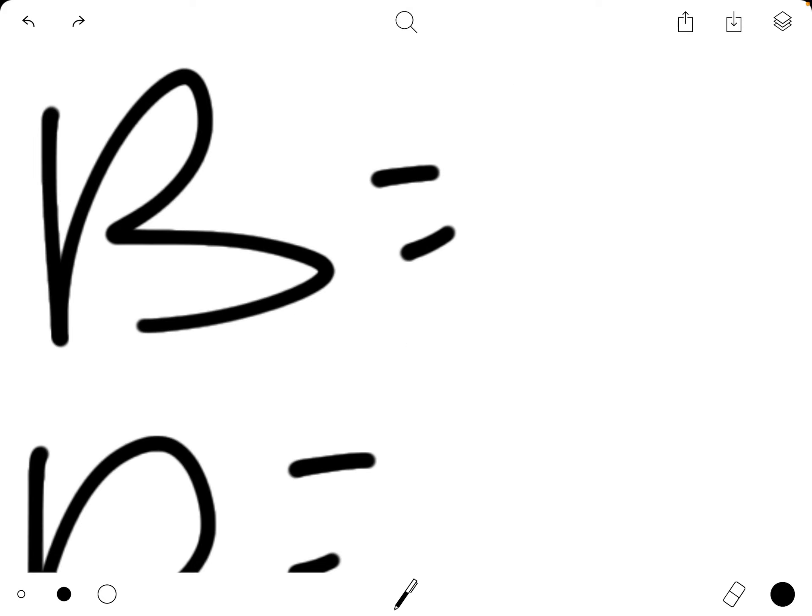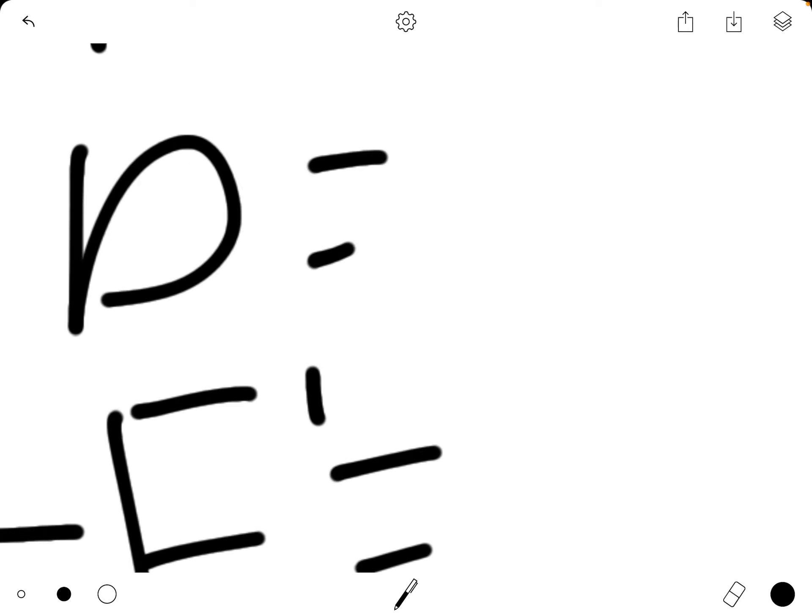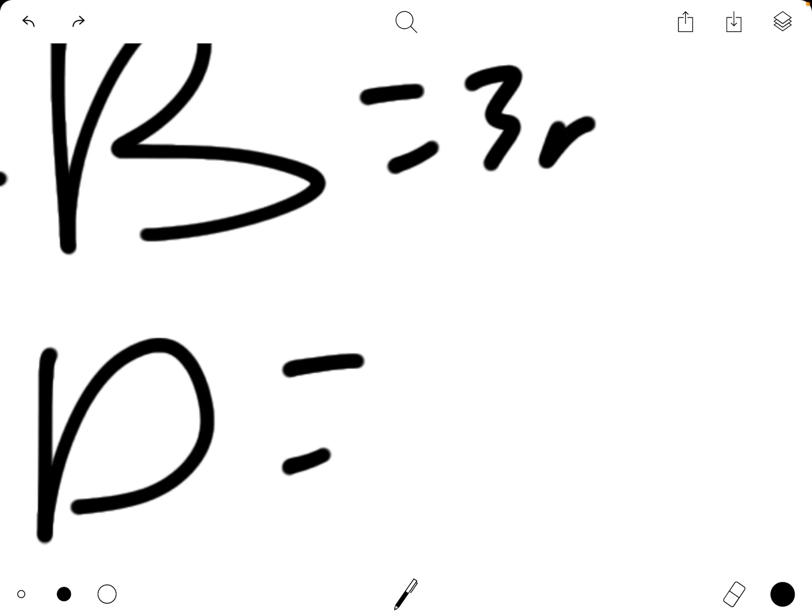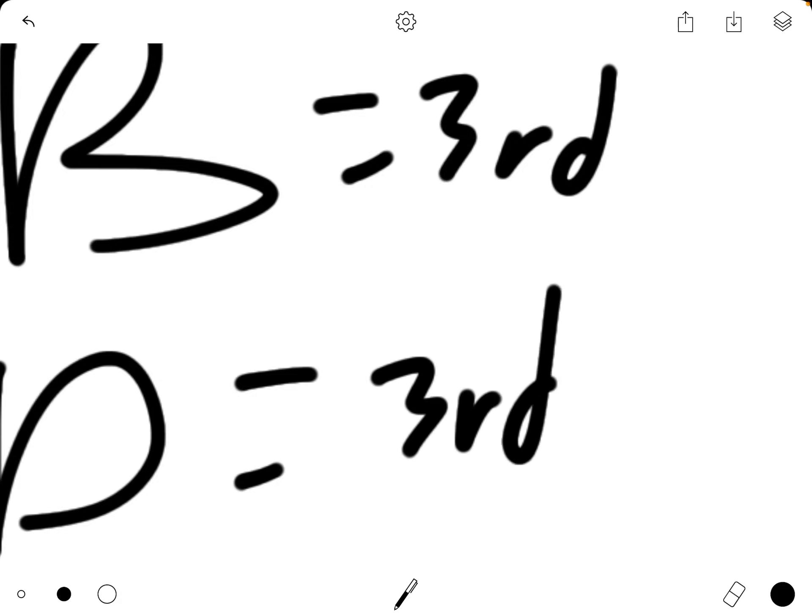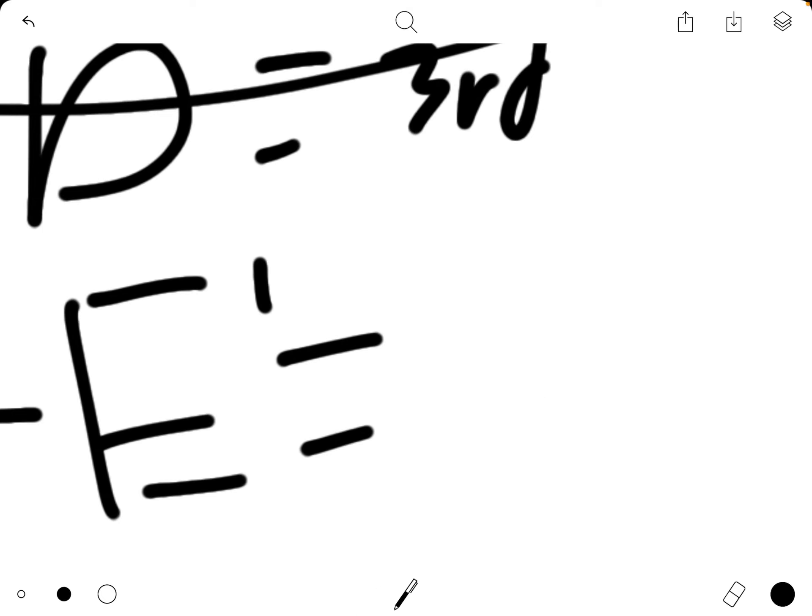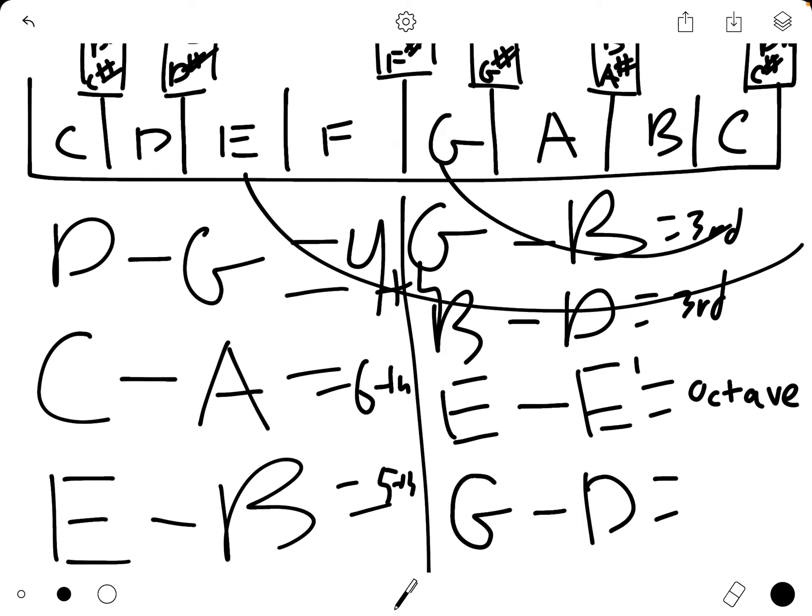From G going up to B is a third. From B going up to D, which would actually be above C, is also a third. That was kind of a tricky one. And then from E going up to the E above it is an octave. So we write out the full word. We will not write eighth or anything weird like that.